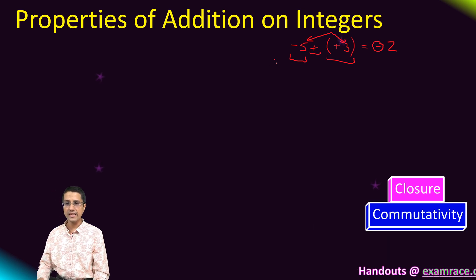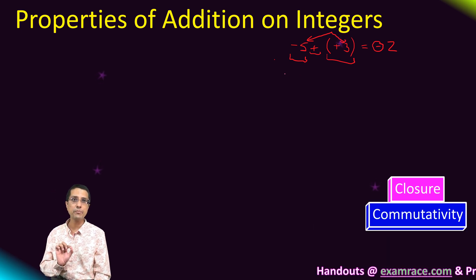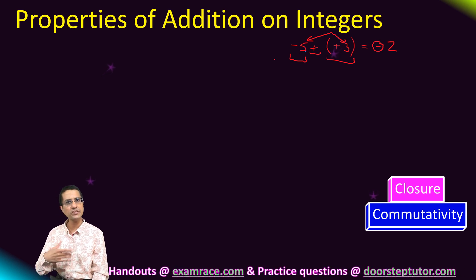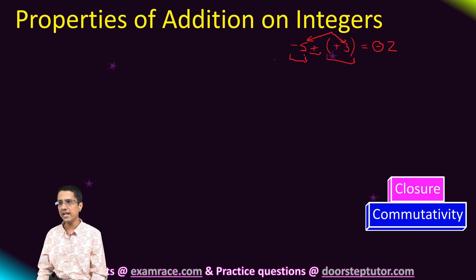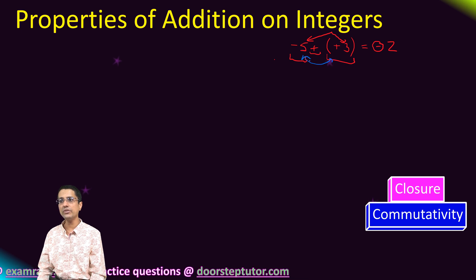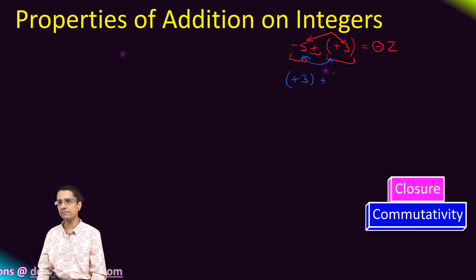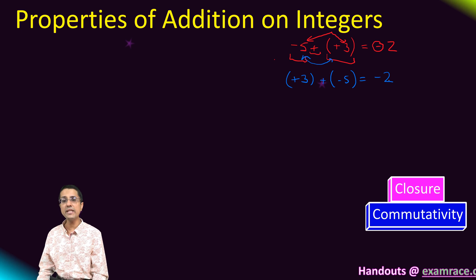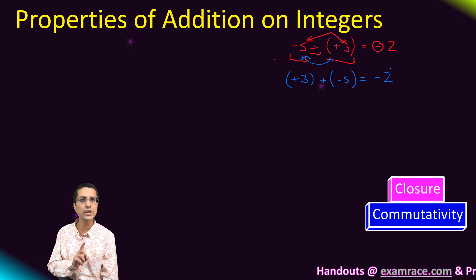The next property is the commutative property of integers. It says that if I have two operands — let's say minus 5 and plus 3 — and I change the order of those two operands around the plus sign, my answer would still be minus 2.